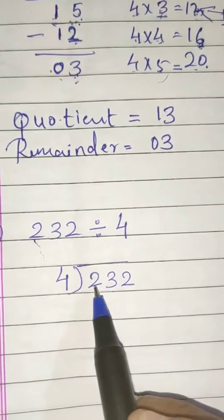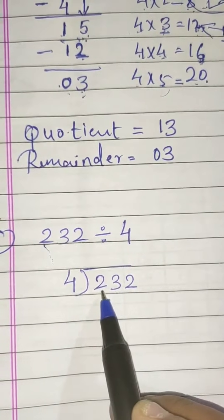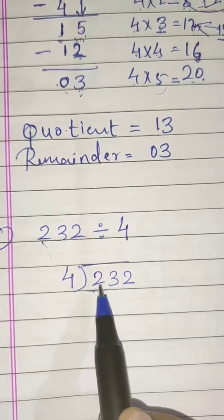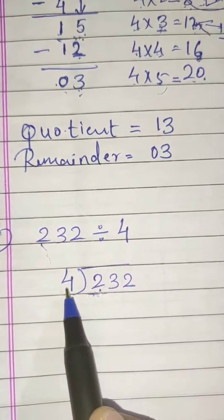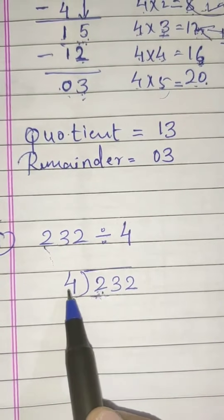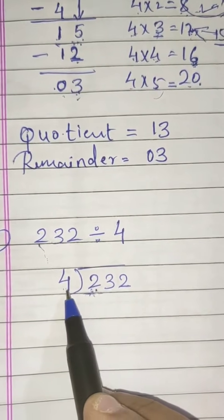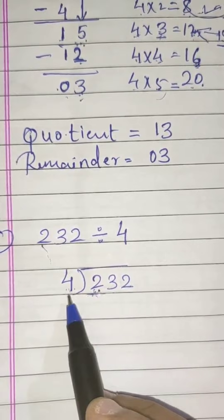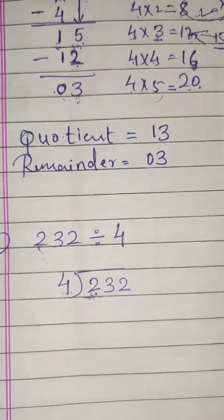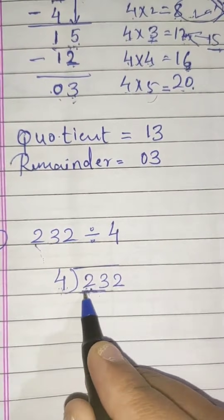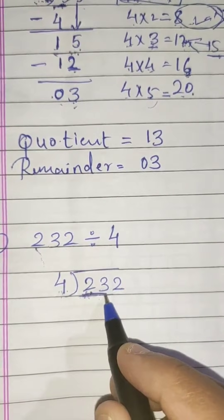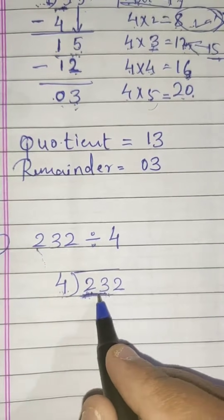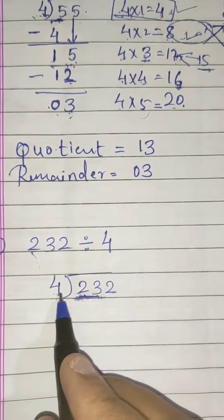You have to see the first number. As you know, in division you always start dividing from the highest place value. Here we have units, tens, and hundreds, so we start from the hundreds. If you see 2 and 4 — this 2 is smaller than 4, so you can't divide 2 by 4 because 2 does not appear in the 4 times table. So you have to take one more number, the next digit, making it 23.